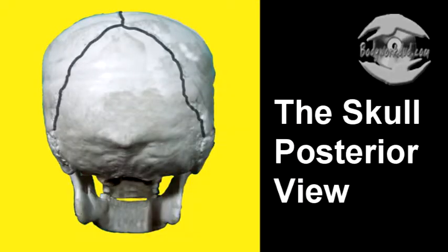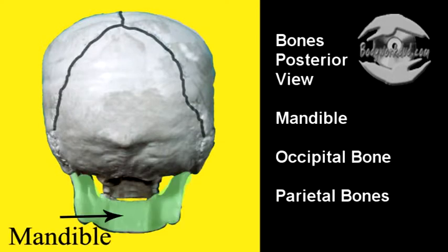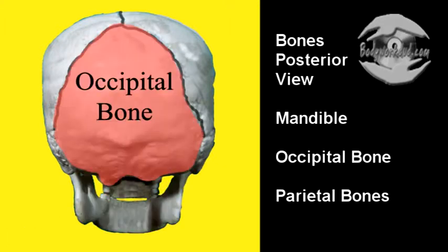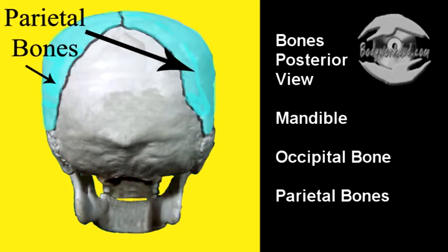The skull, posterior view. First, we're going to talk about the bones. We have the mandible, shaded in green. Occipital bone. The paired parietal bone.